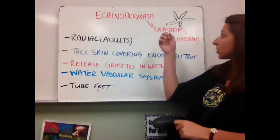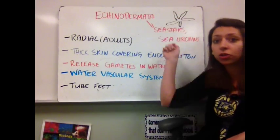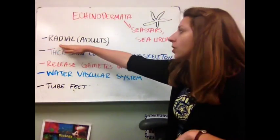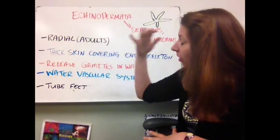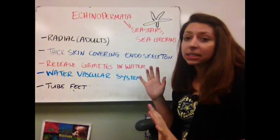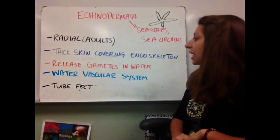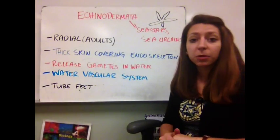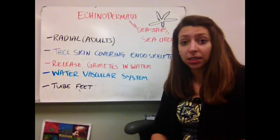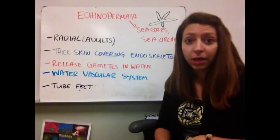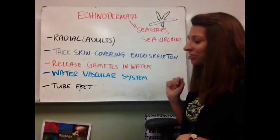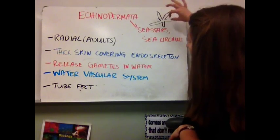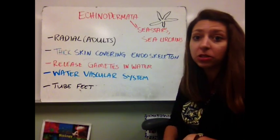Now we have our Echinodermata. These include our sea stars, or starfish, and our sea urchins. When these are adults they're going to have radial symmetry, but younger stages they won't. They have a thick skin covering an endoskeleton, and they release gametes into the water — a male individual releases sperm cells and a female releases egg cells, and reproduction happens in the water. They all have a water vascular system and tube feet. They actually have pretty complex organs, and we'll look at sea stars a little later on.